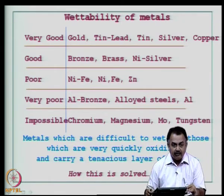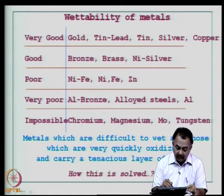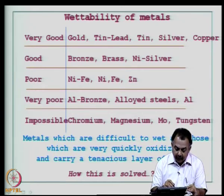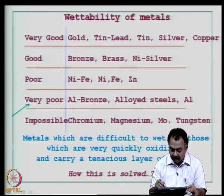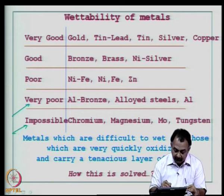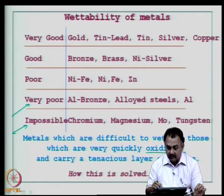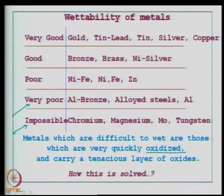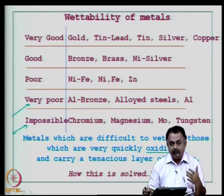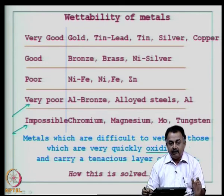Materials with very good wettability include gold, tin, lead, tin-silver, and copper. Fairly good wettability: bronze, brass, nickel, and silver. Poor wettability: nickel-iron, nickel alone, iron, and zinc. Very poor: aluminum bronze, alloyed steels. Impossible to wet: chromium, magnesium, molybdenum, tungsten. Materials that are difficult to wet are those that oxidize quickly — surfaces with a tenacious oxide layer cannot wet. The same applies to printed circuit boards: if the surface is not properly prepared, even tin-lead, tin, or gold surfaces can exhibit poor wettability.